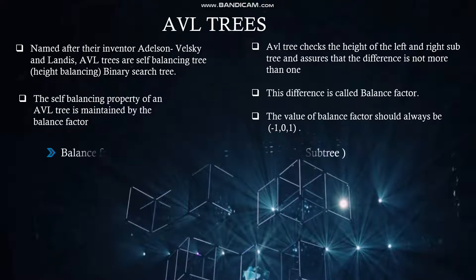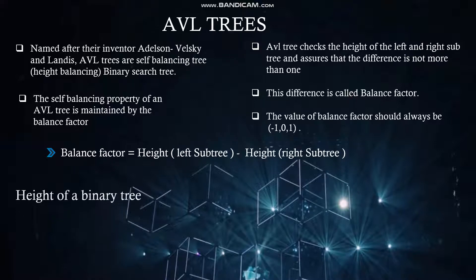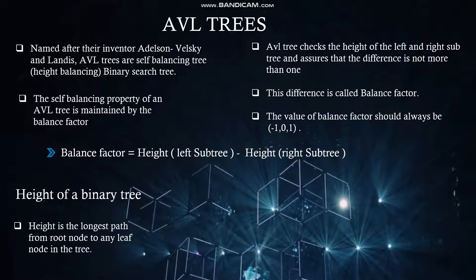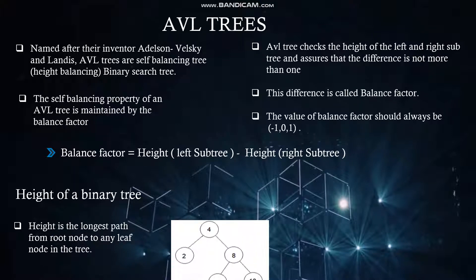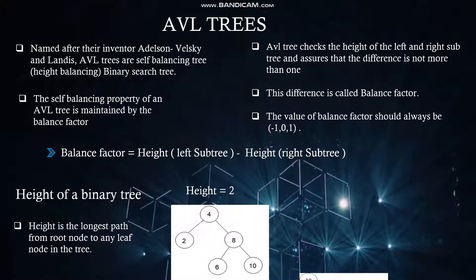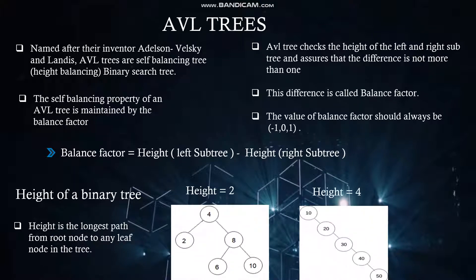Balance factor equals height of left subtree minus height of right subtree. How to find the height of the binary tree? Height is the longest path from the root node to any leaf node. In this example, the height is 2, and in this one, the height is 4.